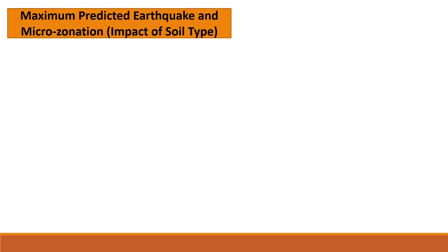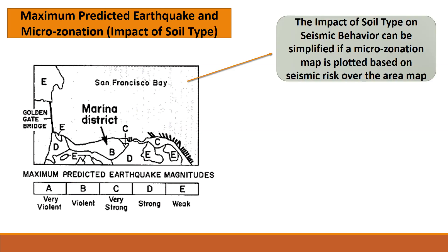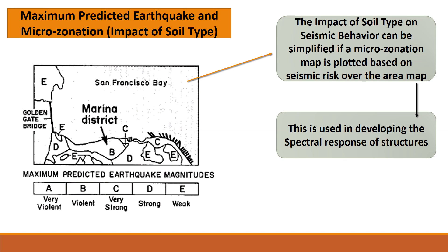Having now known the design spectra, the main inquiry would be how to identify the soil type for a particular region. For this, seismic risk mapping is to be done and microzonation maps are to be developed, as shown here for San Francisco. Although based on the maximum predicted earthquake, it identifies soil types, faults and fissures in the soil, and can be used to determine the spectral response of a structure for a particular area.